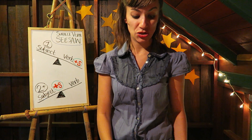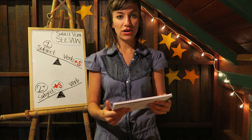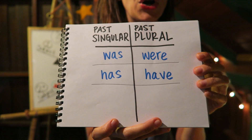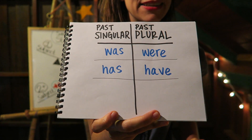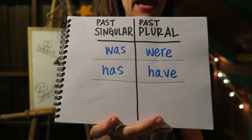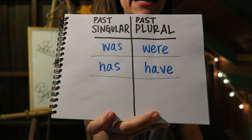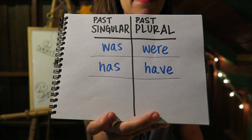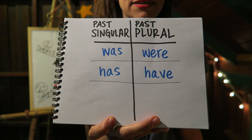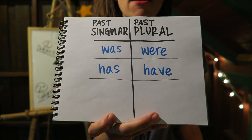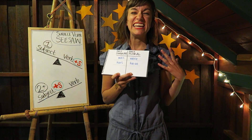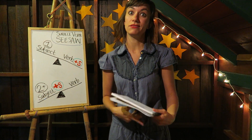But remember one thing: if there is a helping verb, it needs to agree with the subject. Here are common helping verbs: was, were, have, has. For example: 'The cat was eating cupcakes, the cats were eating cupcakes. The cat has eaten all the cupcakes, the cats have eaten all the cupcakes.' If there is a helping verb, it needs to agree with the subject.